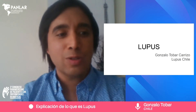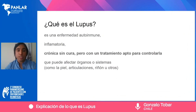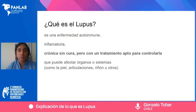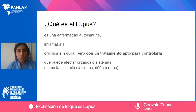¿Qué es el lupus? Es una enfermedad autoinmune donde sabemos que los pacientes tienen una inmunidad alterada que produce que las defensas del cuerpo se devuelvan contra los propios órganos o sistemas del cuerpo. Este ataque va produciendo inflamación, por lo tanto también es una enfermedad inflamatoria.